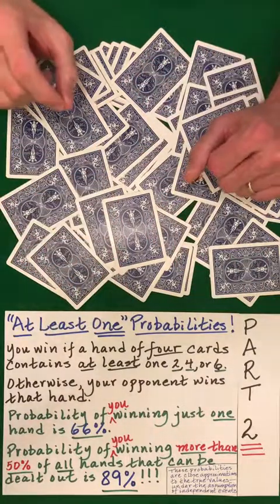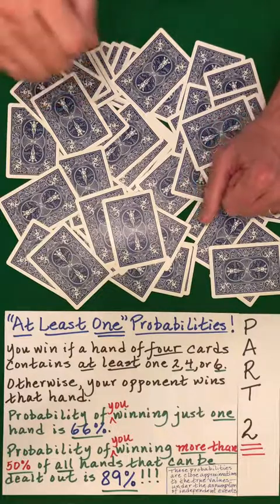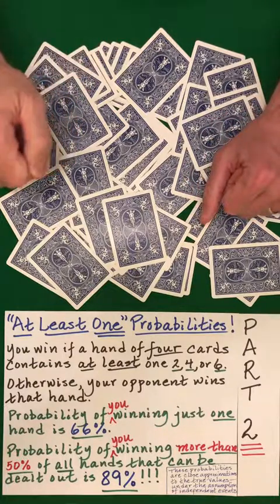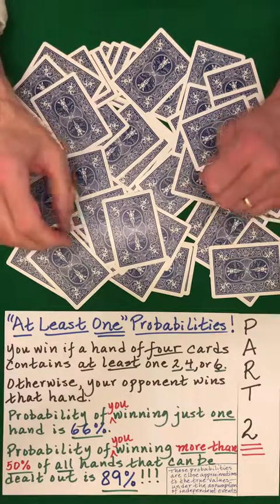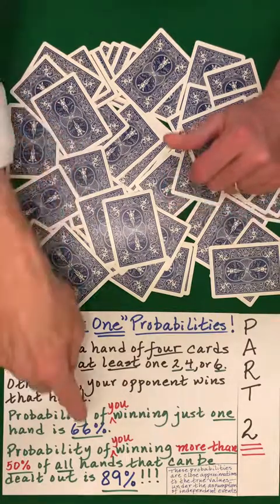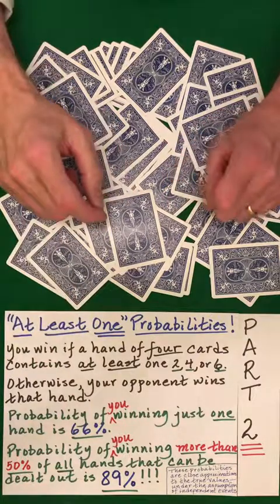So, I will pause the video and set out all four card hands, starting from the top of the deck. And if a hand contains a 2, 4, or 6, it's a winning hand for you. Unbelievably, there's a 66% chance of that happening.